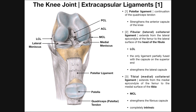Over here we have the medial meniscus, and here's our lateral meniscus. We'll talk about the menisci in more detail in a future video. For now, it suffices to say that what the menisci do is increase the concavity of the tibial condyle surface. Without the meniscus, the femoral condyle would not sit as deeply into the tibial condyle. The meniscus is thicker around its circumference, increasing the depth of this concavity so that the femoral condyle can sit in it more stably — and both menisci do that.